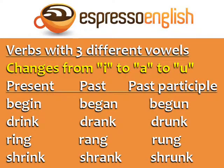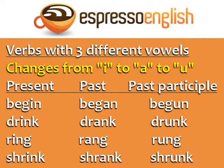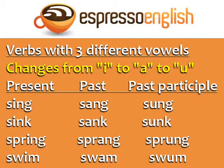Verbs with three different vowels: in this group, the vowel changes from I to A to U. Begin, began, begun. Drink, drank, drunk. Ring, rang, rung. Shrink, shrank, shrunk. Sing, sang, sung. Sink, sank, sunk. Spring, sprang, sprung. Swim, swam, swum.